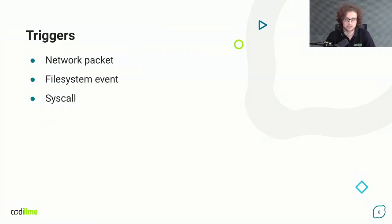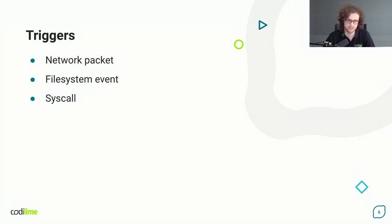A BPF program can be triggered by a kernel hook. Basically three triggers are possible: one is network packets appearing on an interface, another is an event in the file system, and also a call of a system function.